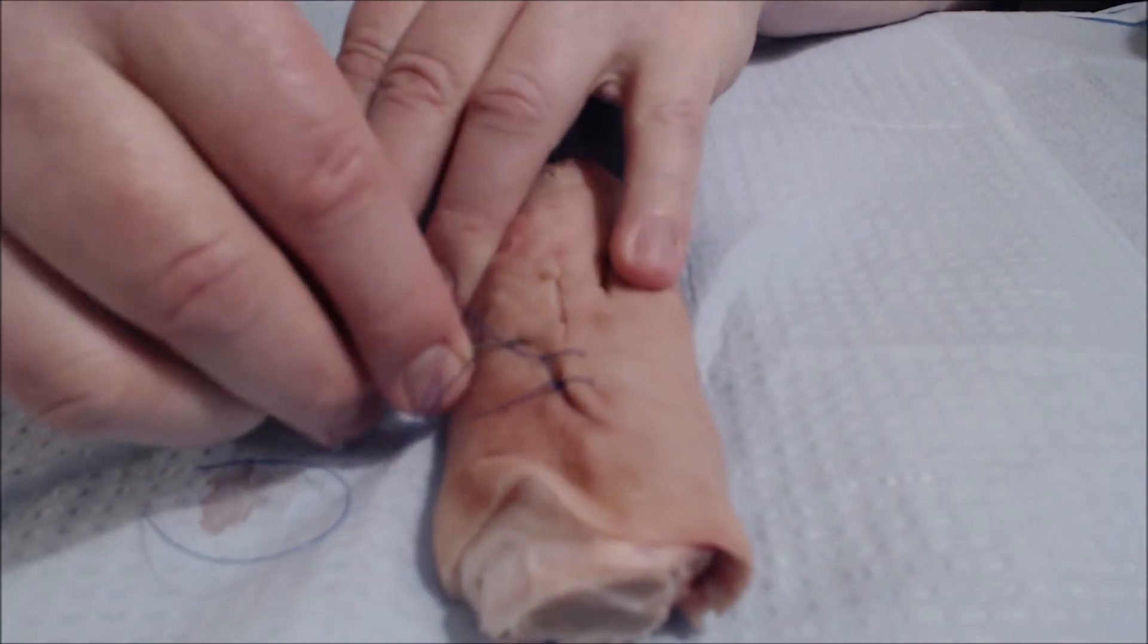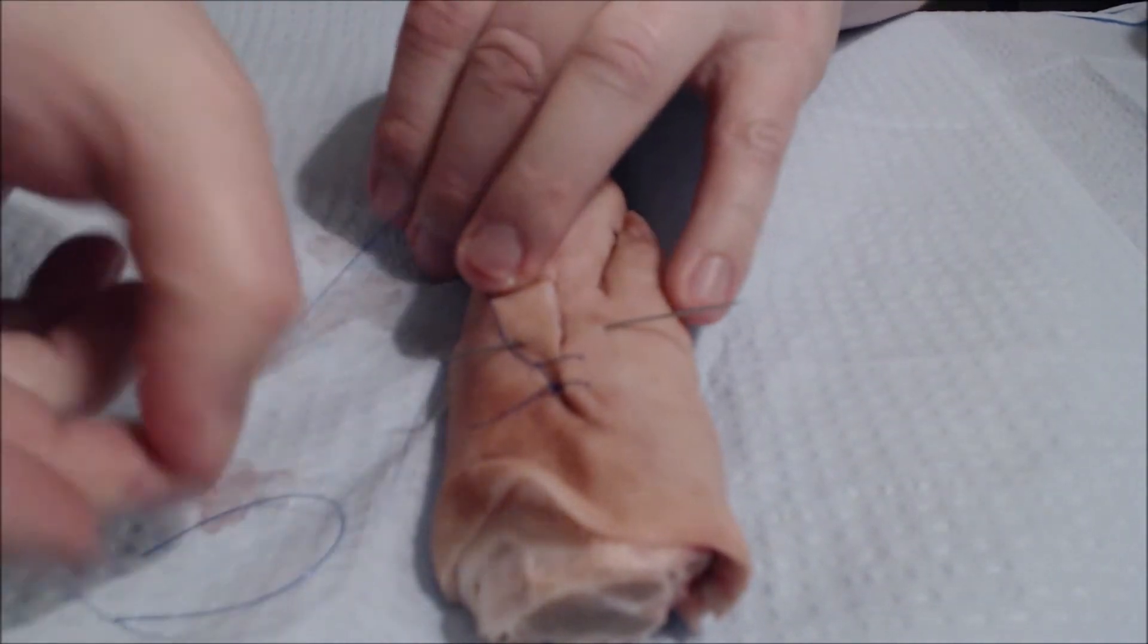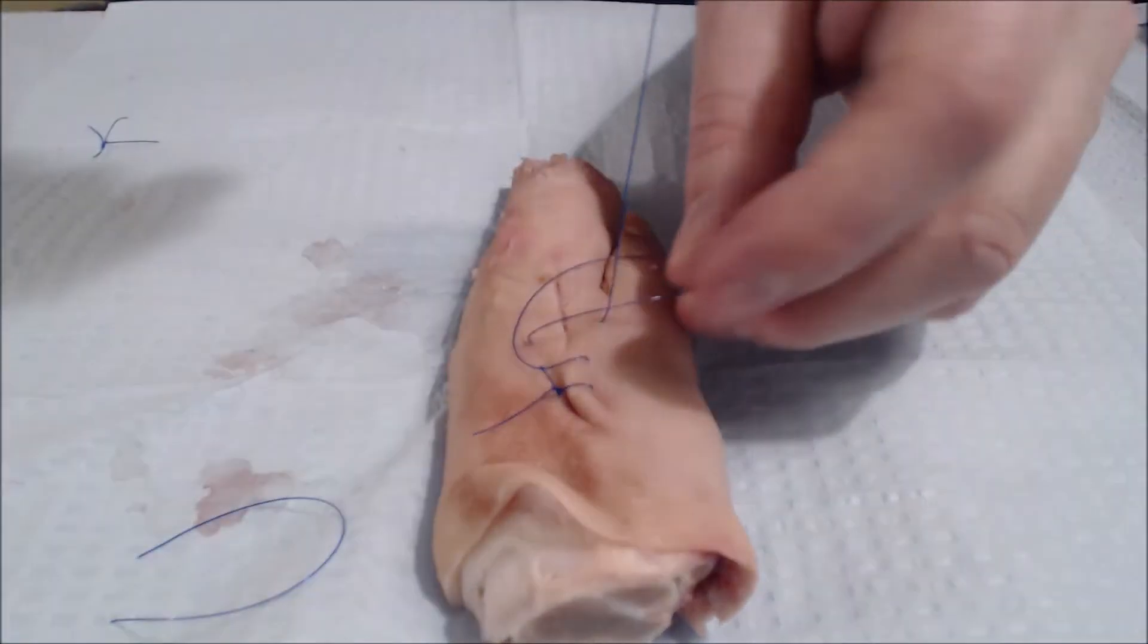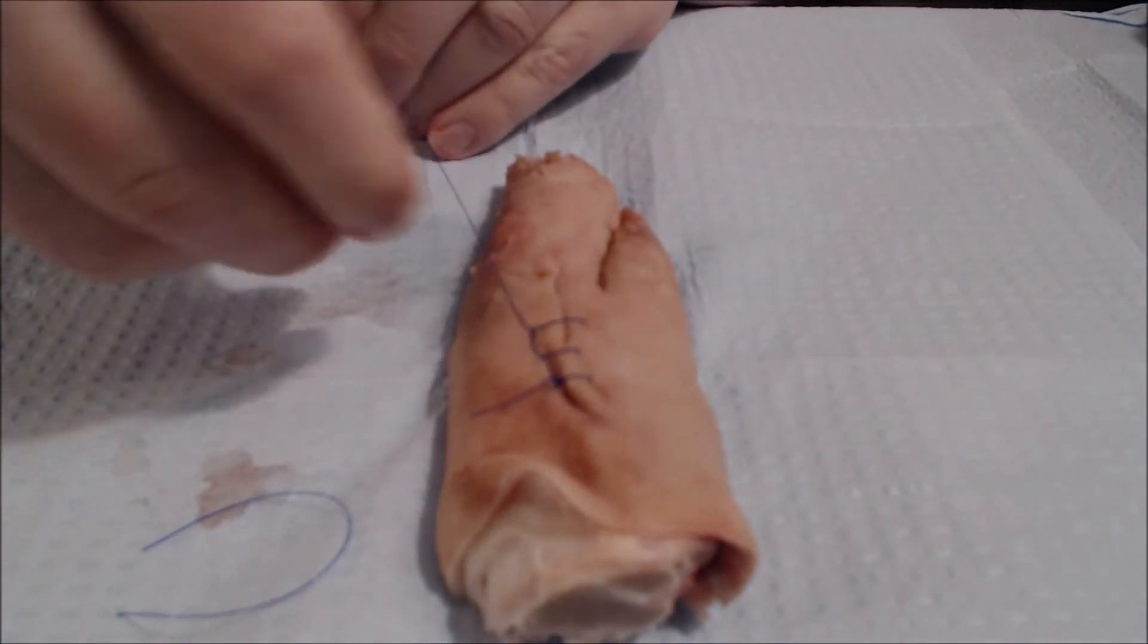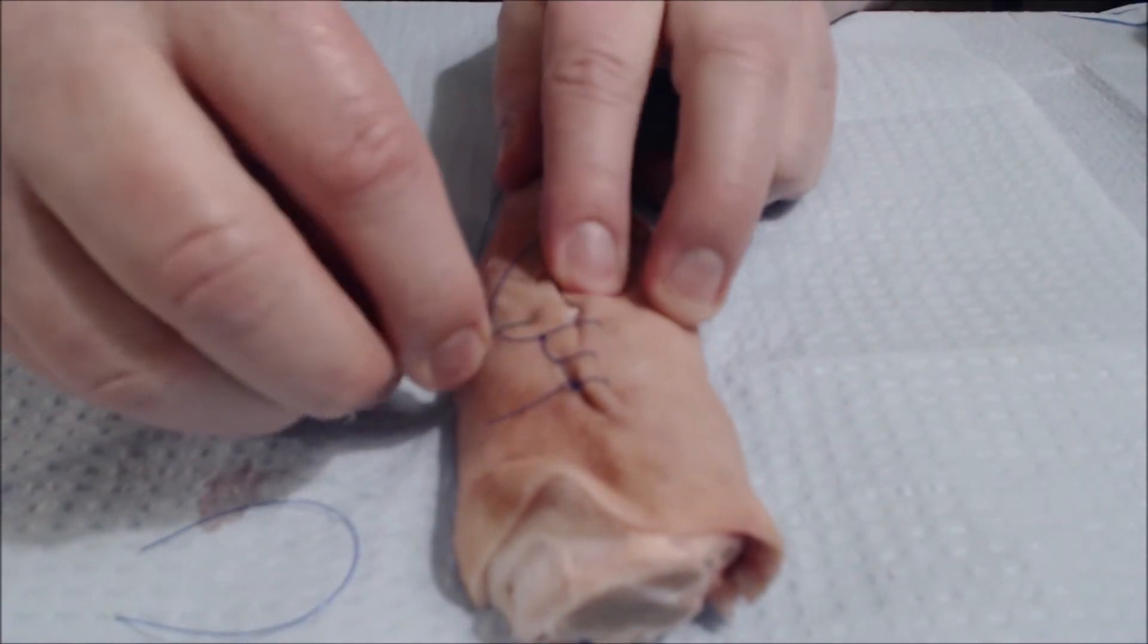Another one. Again, we're going to place the loop of suture over the top of the needle and pull the needle through the loop. You can see that we're just going to march our way down as we did before.